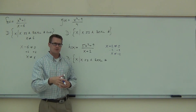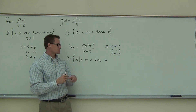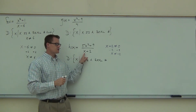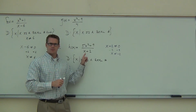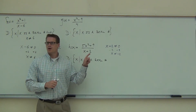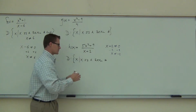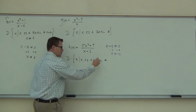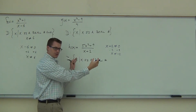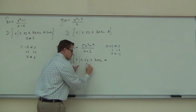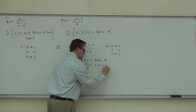Why can't it equal negative two? Because if you plug in negative two, that's a big problem — the denominator becomes zero. So we set the denominator not equal to zero, we solve it, and we get that piece of the puzzle. We finish it off: x is a real number, and x does not equal negative two.